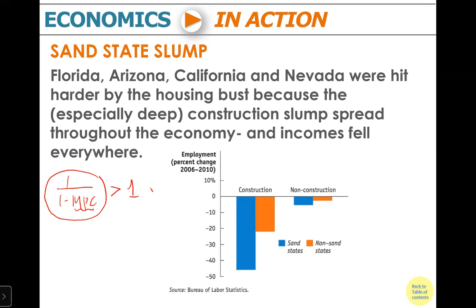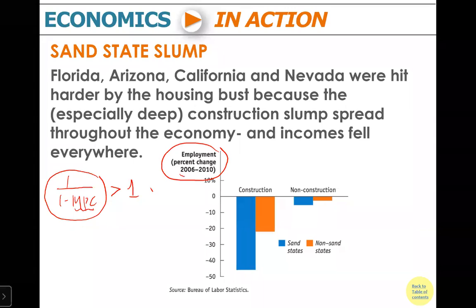Now we can look at a case to understand the multiplier at work. Let's look at employment change in the time period from 2006 to 2010. What happened between 2006 and 2010? There was a housing bust — essentially a collapse in the housing market.